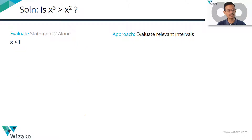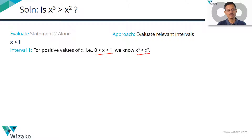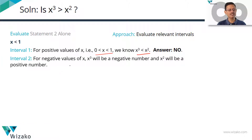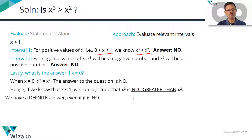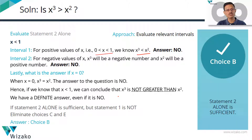To quickly summarize Statement 2 in printed form: For X between 0 and 1, X cubed is less than X squared — answer is NO. For X less than 0, X cubed is negative and X squared is positive, so X cubed is less than X squared — answer is NO. At X equals 0, X cubed equals X squared — answer is NO. Uniform NO throughout — Statement 2 alone is sufficient, and choice B is the correct answer.